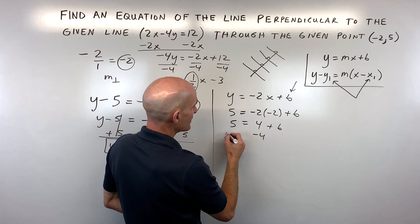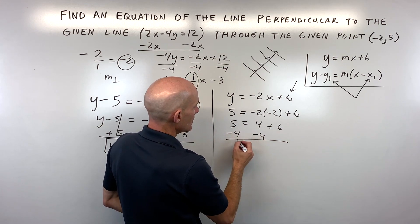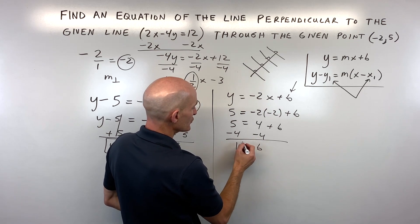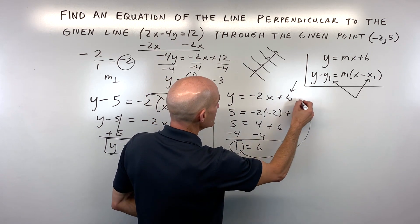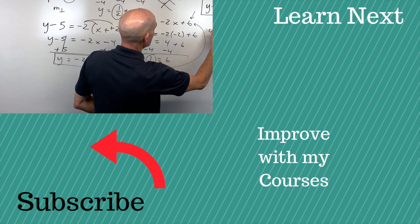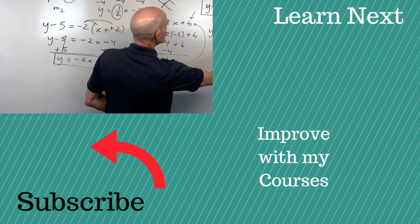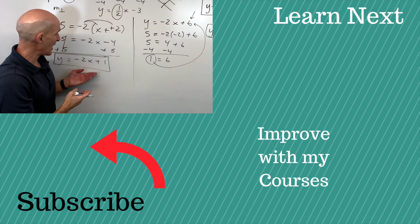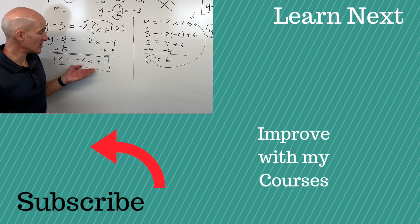We're going to get b by itself by subtracting 4 from both sides. You can see that b is equal to 1. And if we put 1 back into our equation here, we can see that y equals negative 2x plus 1 is our perpendicular line. Same thing we got over here when we started in the point-slope form.